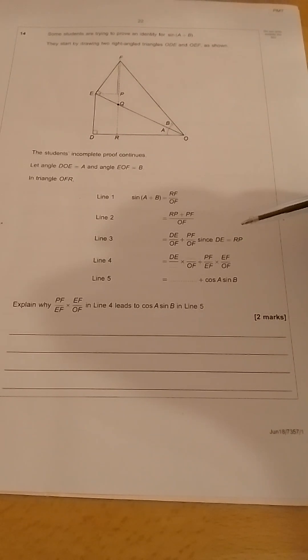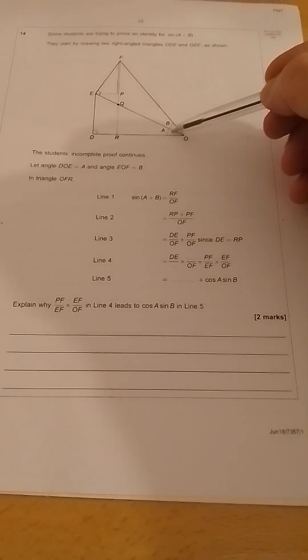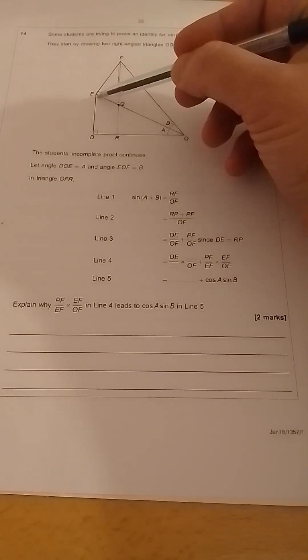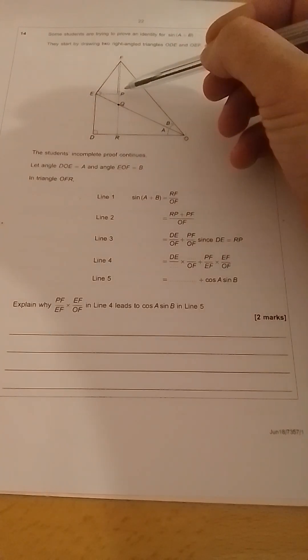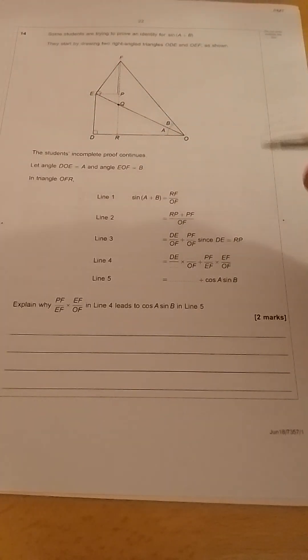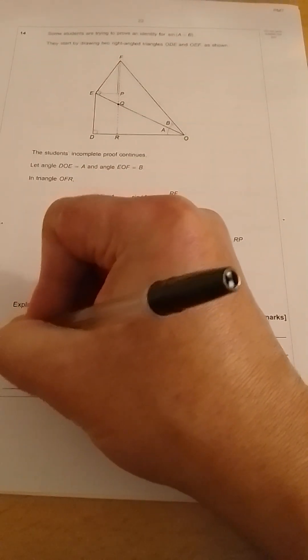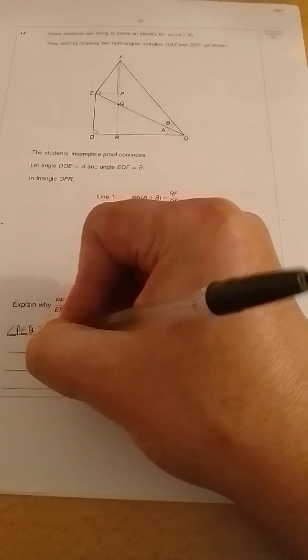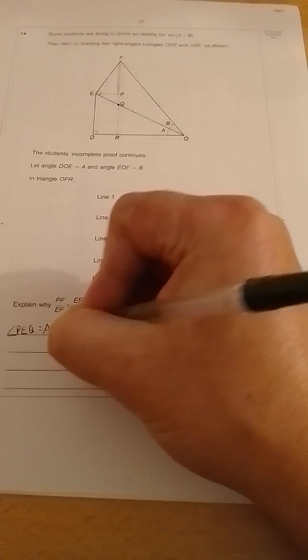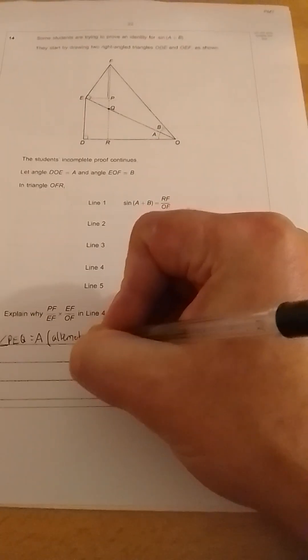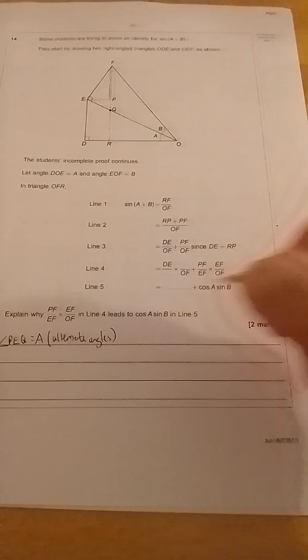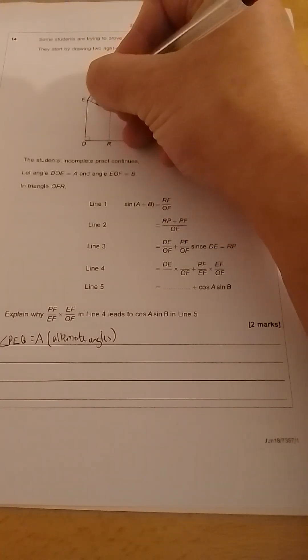If we look at this angle here, A, we can see that the angle up here, which is PEQ, is also A. So we could say angle PEQ is equal to A, and the reason is they are alternate angles. So this angle here is A.